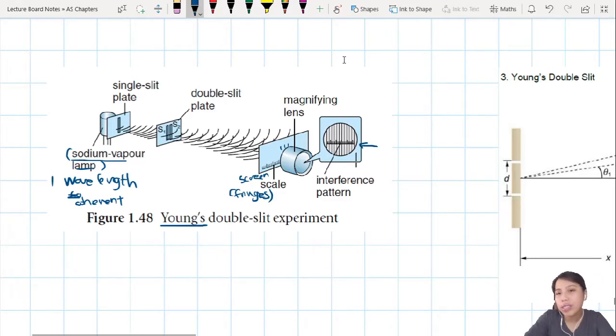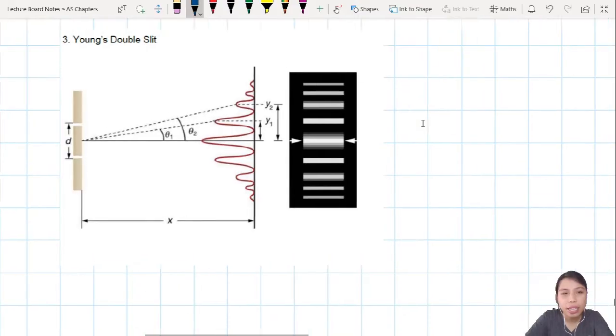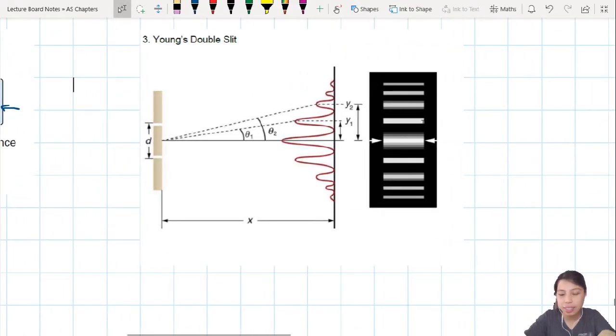And then you put a ruler to measure the distance between the bright and dark fringes. That's all Yang's double slit experiment is about. So Yang did this experiment, looked at the math behind it, and came up with some interesting ideas. So if we generally look at this, I'm going to rename this a little bit, by the way.